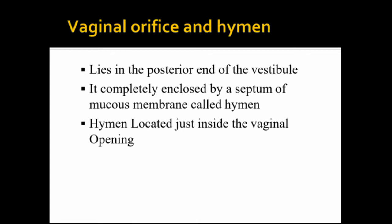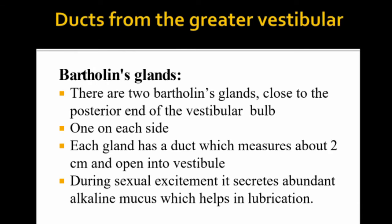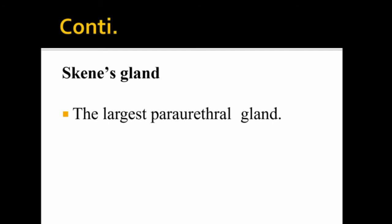The ducts from the greater vestibular glands open into the vestibule. The first is Bartholin's gland — two Bartholin's glands on both sides. They can activate the vestibular bulb on both sides of the vulva. During sexual excitement, these glands secrete mucus, which helps provide lubrication.